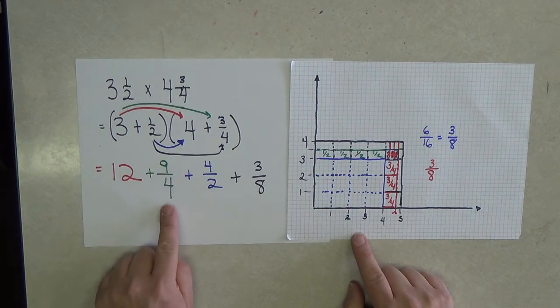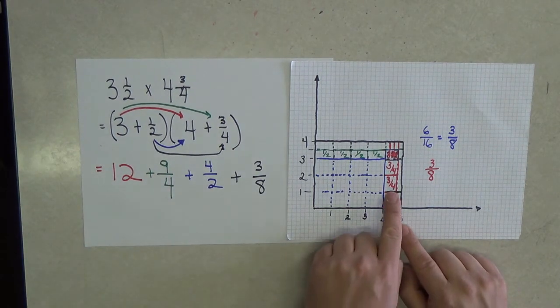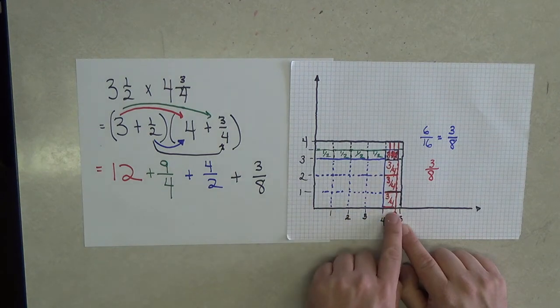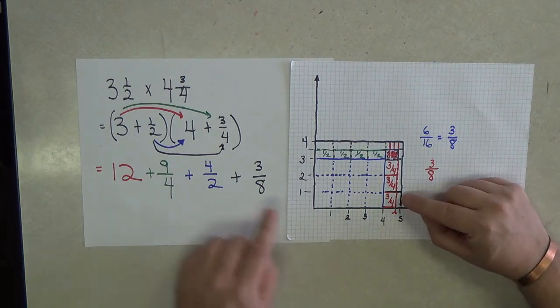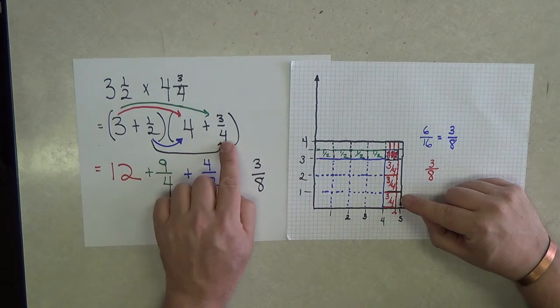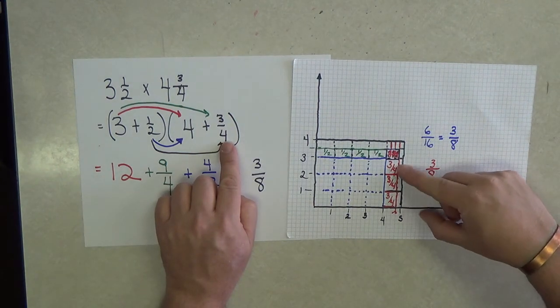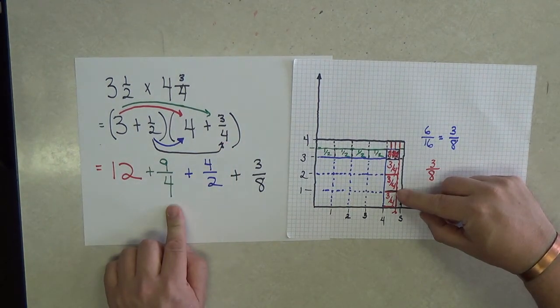Then the 9 fourths. Well, the 9 fourths are over here written in 3 various pieces. Notice, it is 3 pieces of 3 fourths for a total of 9 fourths.